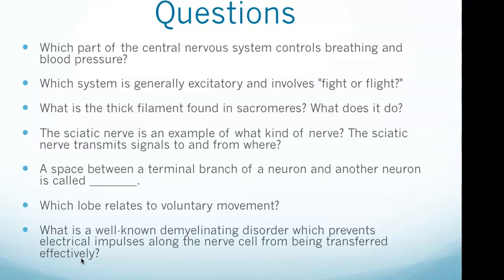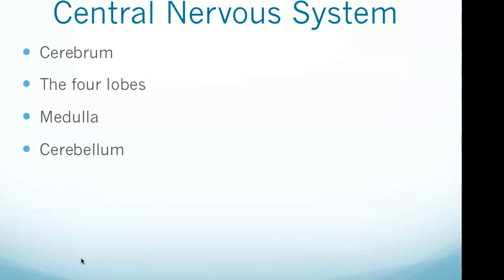Voluntary movement was one of our questions — the answer is the frontal lobe. The occipital lobe is responsible for vision. The temporal lobe is for comprehension, emotion, language, memory, and sensory input.